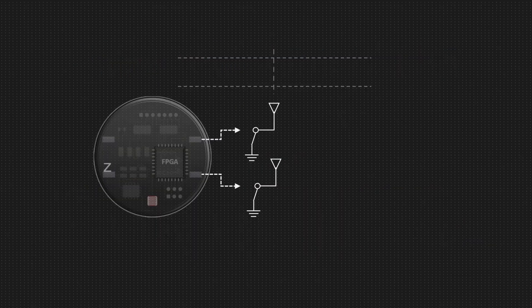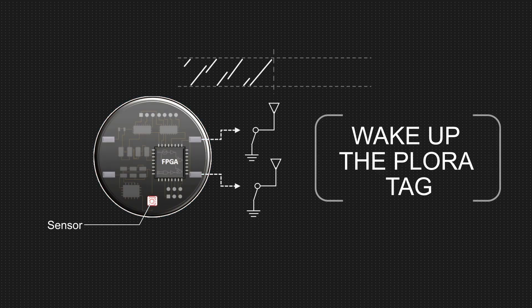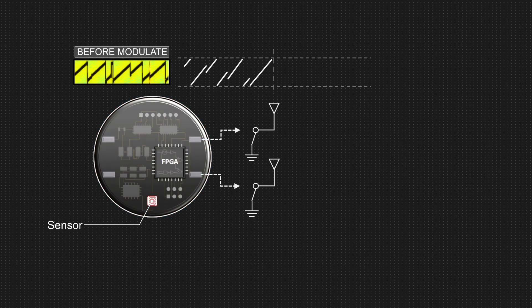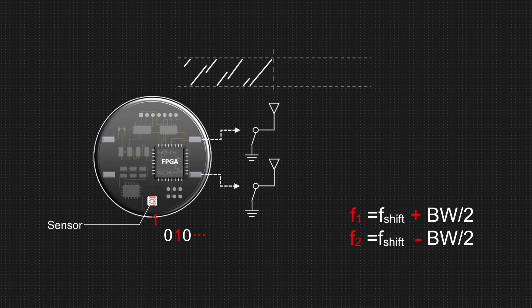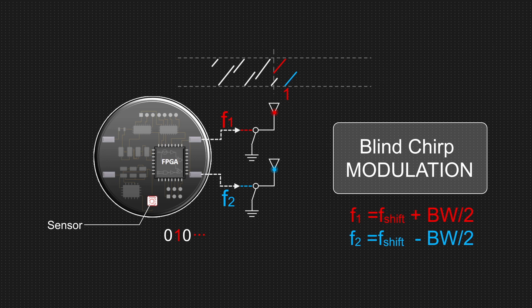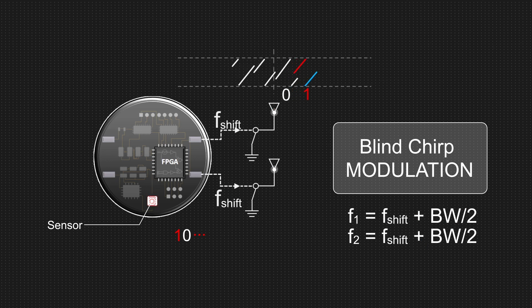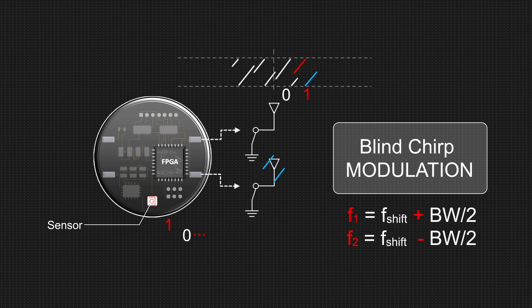After detecting the preamble, the P-LORA tag enters the modulation state. We shift the incoming active commercial LoRa chirp by an amount of half bandwidth and minus half bandwidth to convey 1 and 0 bits, and splice the in-band part of these two shifted LoRa chirps into a new chirp signal.